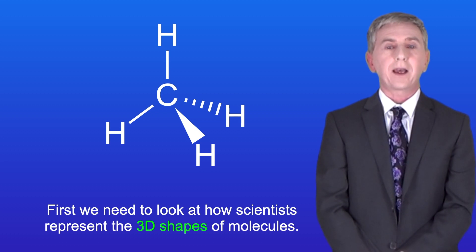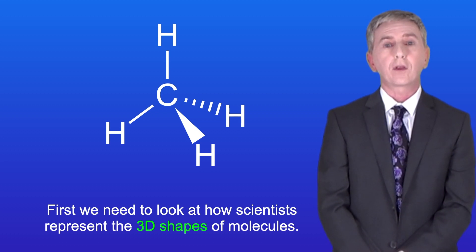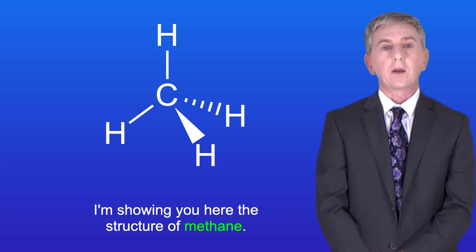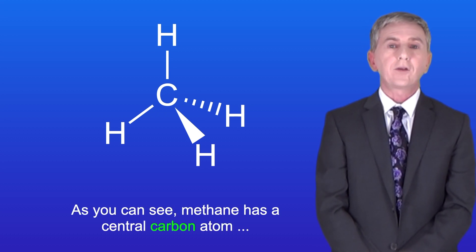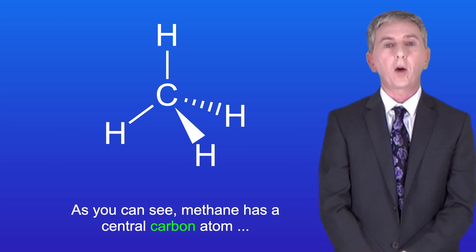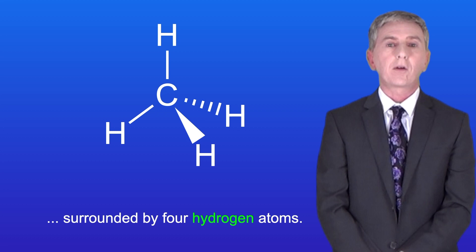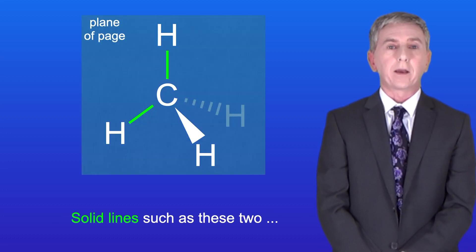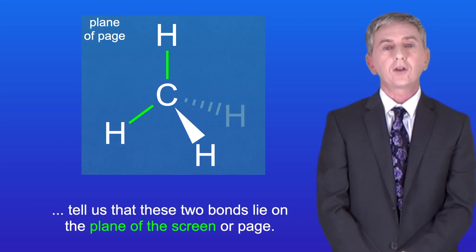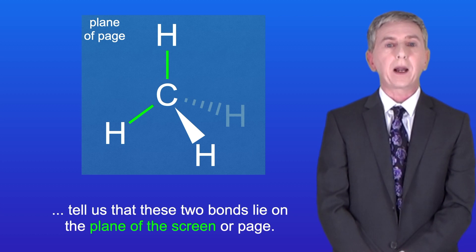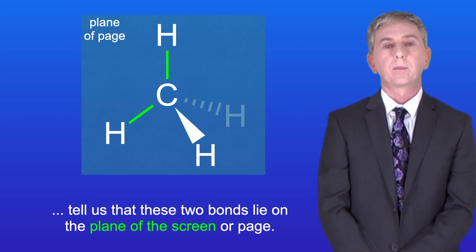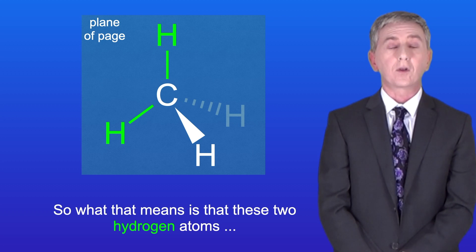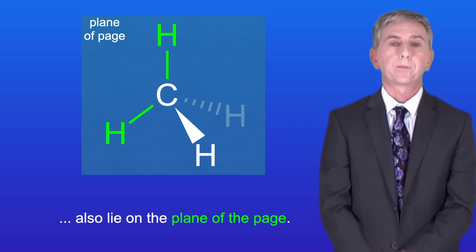First we need to look at how scientists represent the three-dimensional shapes of molecules. I'm showing you here the structure of methane, which has a central carbon atom surrounded by four hydrogen atoms. Solid lines tell us that those bonds lie on the plane of the screen or page, meaning those two hydrogen atoms also lie on the plane of the page.